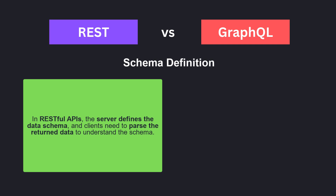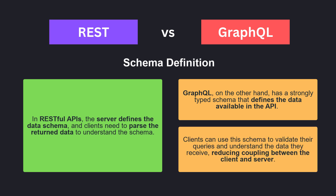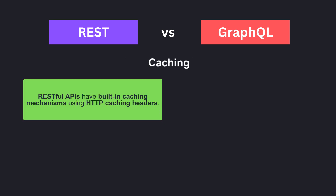In RESTful APIs, the server defines the data schema and clients need to parse the returned data to understand the schema. GraphQL, on the other hand, has a strongly typed schema that defines the data available in the API. Clients can use this schema to validate their queries and understand the data they receive, reducing coupling between the client and the server.